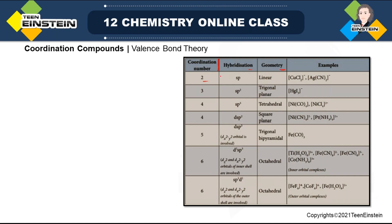When coordination number is two, that is the minimum possibility, hybridization is sp. It is easy to remember: when it is two it will be sp. When coordination number is two, we require two hybrid orbitals. When we have sp hybridization that means we have 1s and 1p, and hybridizing gives two new sp orbitals. So coordination number two means two orbitals are needed, and that is possible only from sp.